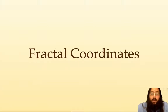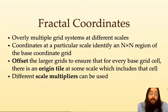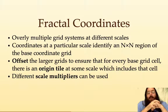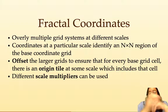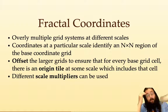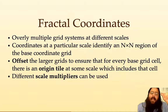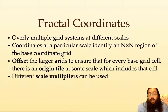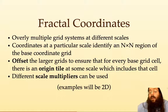So let me talk about fractal coordinates and how they work. The idea is fairly straightforward: overlay multiple grid systems at different scales — this is not a new idea by any means. You simply have a one-by-one grid and a five-by-five grid and do different things at each scale. Truly fractal coordinates, instead of having a fixed number of grids, have an indefinite number of grids — a one-by-one, a five-by-five, a 25-by-25, whatever your scale factor is. The key non-trivial idea is to offset the larger grids to ensure that for every base grid cell there is some origin tile that contains it. We can pick our scale multipliers and apply this to more or less than two dimensions, but my examples are going to be 2D.